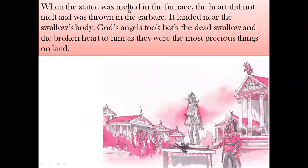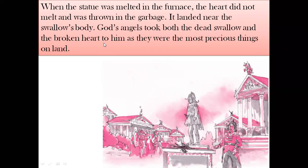When the statue was melted in the furnace — ordered by the mayor who found no gold left on it — the leaden heart did not melt and was thrown into the garbage. This heart landed near the swallow's body, and God's angels took both the dead swallow and the broken heart to God, as they were the most precious things on the land. The statue and the bird were accepted into paradise wholeheartedly and given elevated positions because they helped people by sacrificing their own lives.